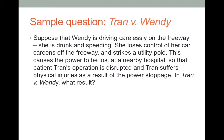Part two of causation is reasonable foreseeability. If you're driving drunk, is it reasonably foreseeable that you will cause a power outage to a nearby hospital and harm a patient who's having an operation? That's pretty far-fetched. A court would probably say no. What should you reasonably anticipate as a drunk driver? You should anticipate that you could harm a passenger in your car, drivers or passengers in other cars, pedestrians perhaps — but something as far-fetched as this, a court would probably say Wendy was not the proximate cause of Tran's injuries.